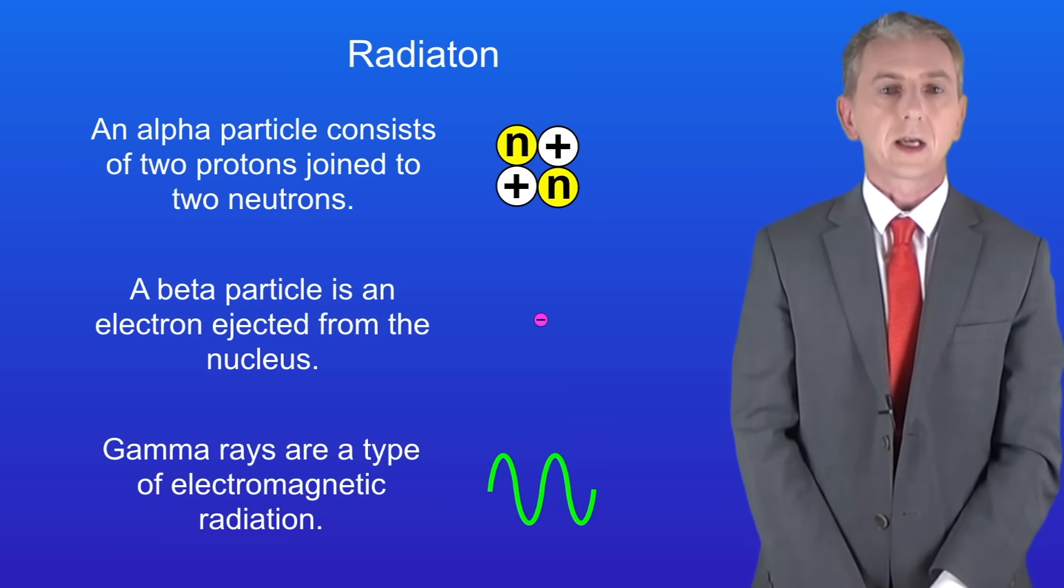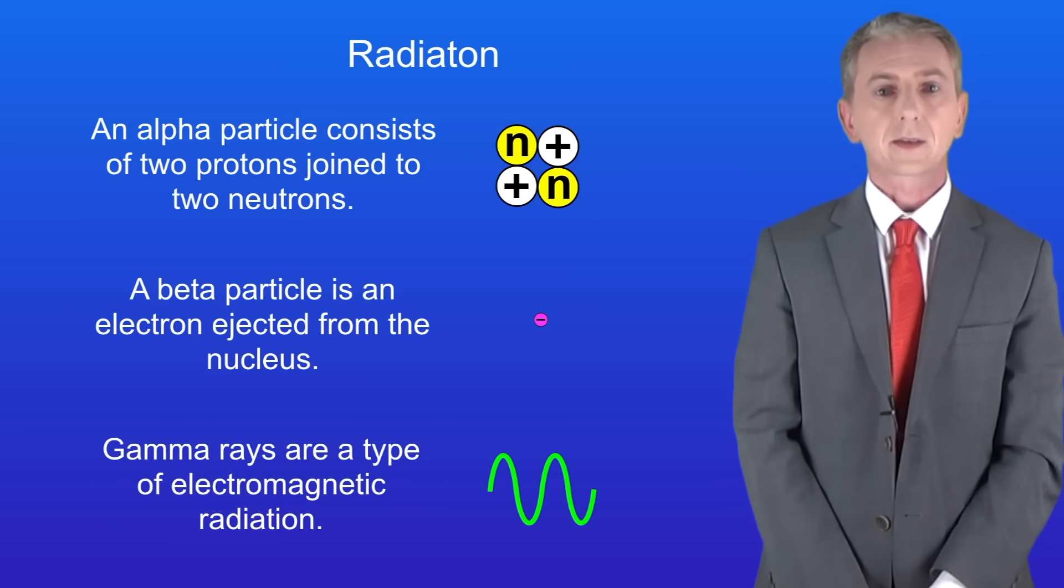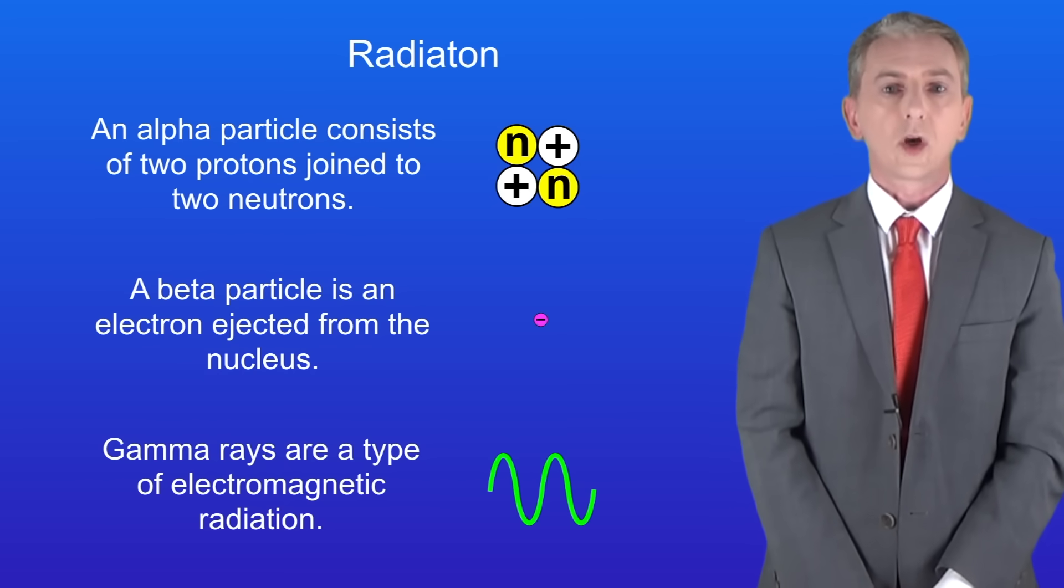Three types of radiation are alpha particles, beta particles and gamma radiation. In this video we're going to look at the properties of these, so let's get started.